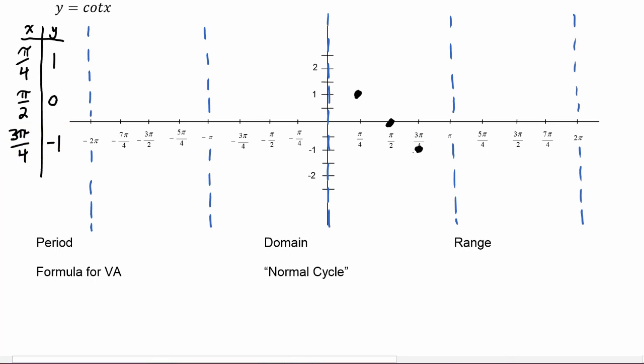So you can see this is going to be similar to the tangent graph. We start from that middle point and make one smooth curve approaching the asymptote in the positive direction, and then we'll start again from the middle point and make one smooth curve approaching the asymptote in the negative direction. This is one full cycle of cotangent.